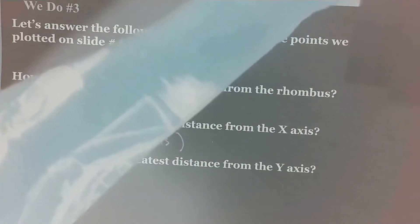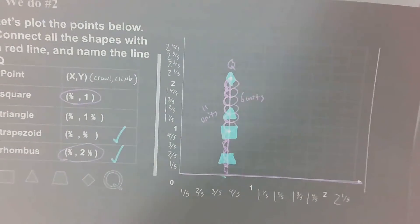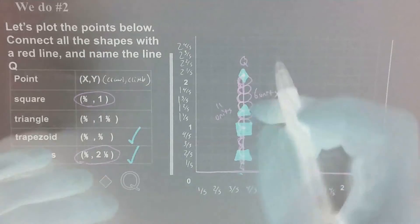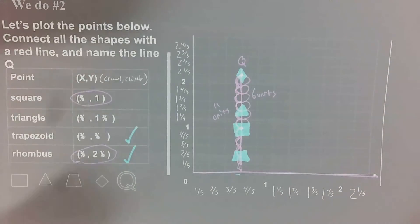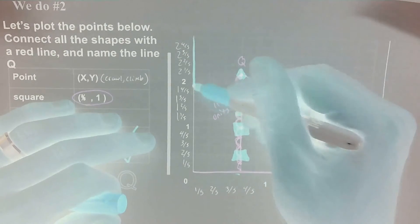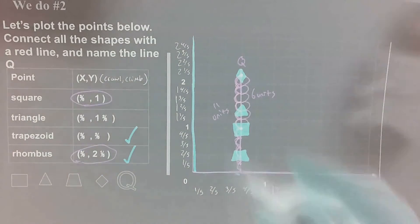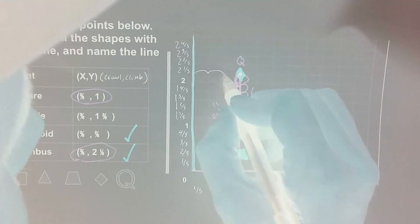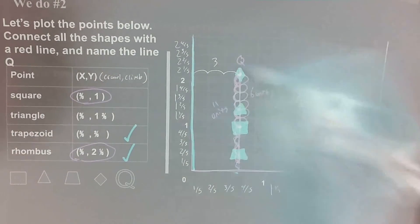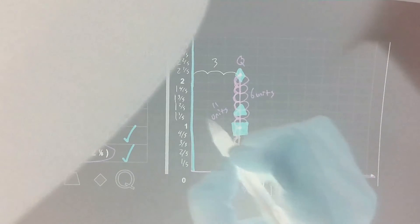Next, which shape is the furthest away from the y-axis? Here's our y-axis. Runs parallel with line Q. And let's count for each shape. One unit, two unit, three units for the rhombus. One unit, two unit, three units for the triangle. One, two, three for the square. And one, two, three for the trapezoid.